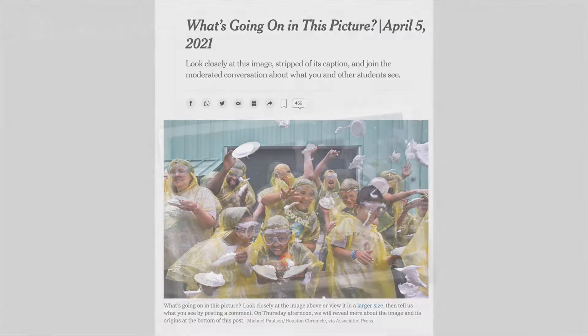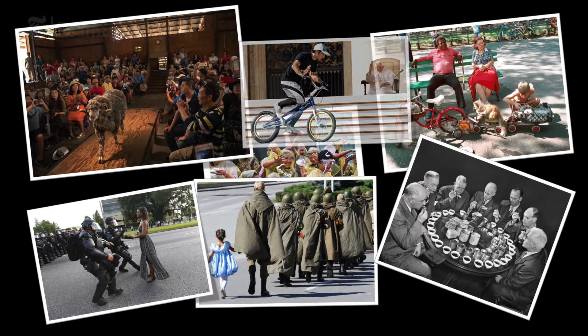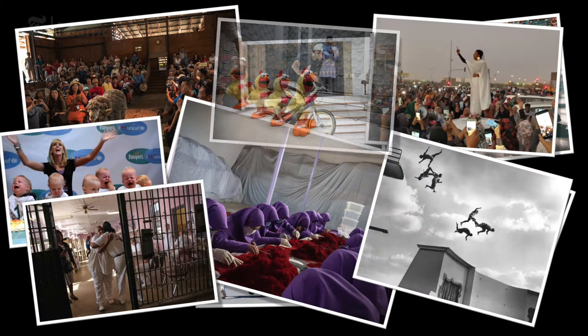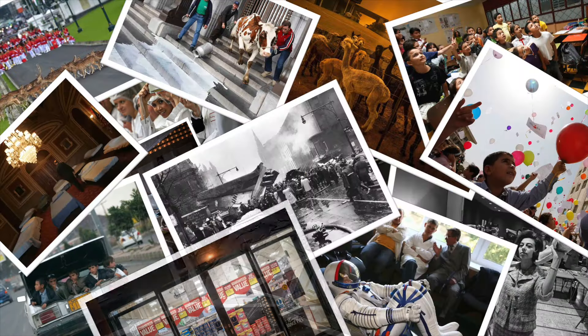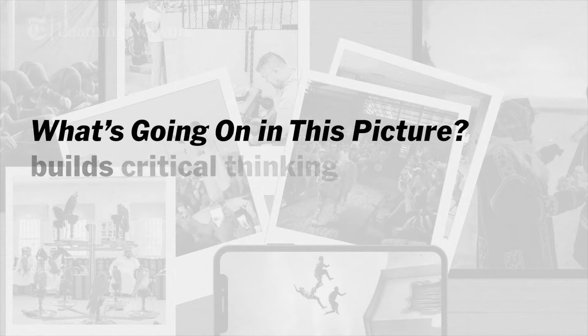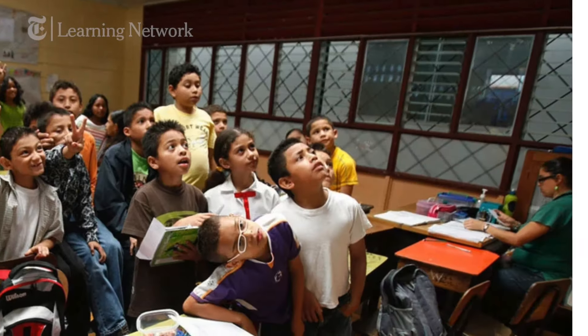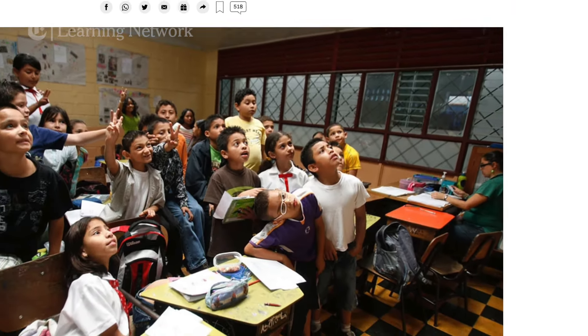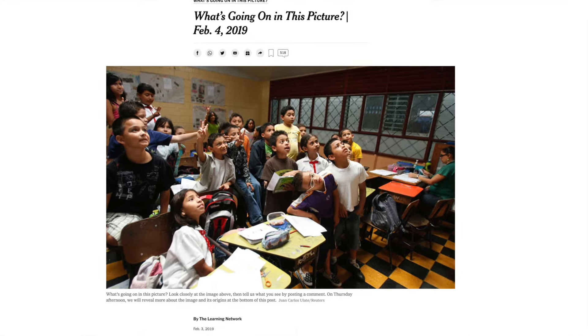All of our photos are archived, so you can participate in the weekly discussion and engage in the current photo, or search our archival photos and use those. What's Going On In This Picture builds critical thinking, communication, and community. The strategies implemented in this activity work to build a foundation for students to begin asking questions of themselves and the world around them.